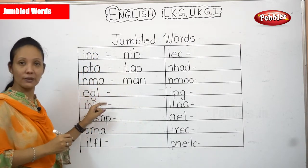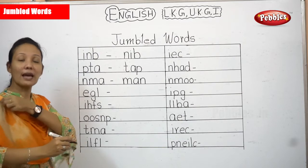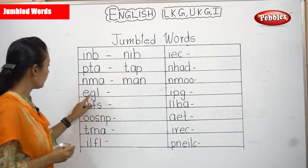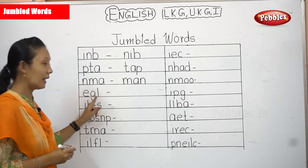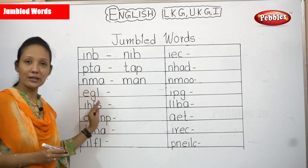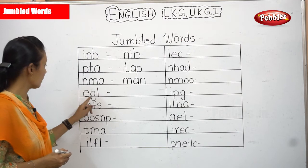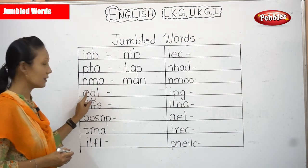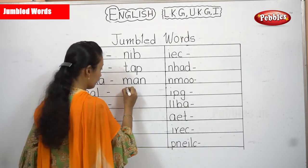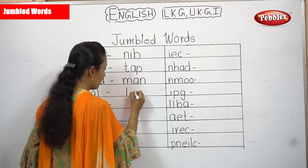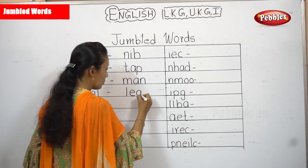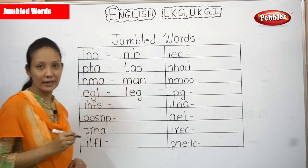Now E, G, L. We do not have a word called EGL, isn't it? What about GEL? We can also write G, L, E. Yes, LEG! L, E, G — leg.